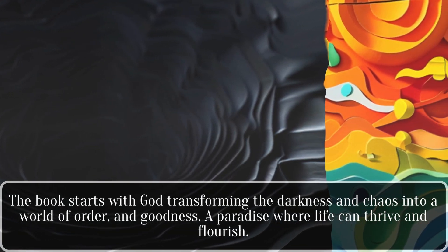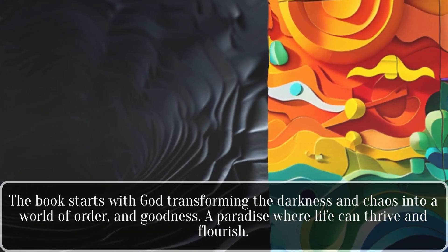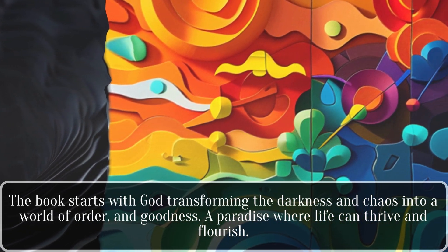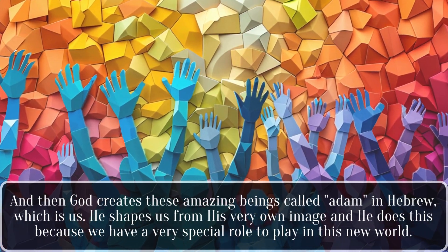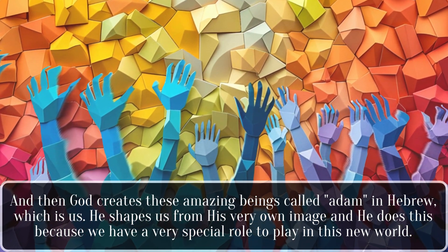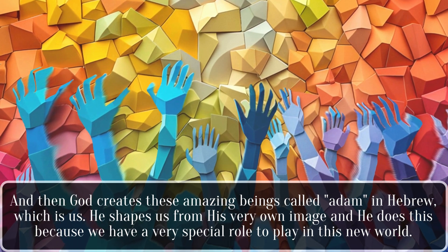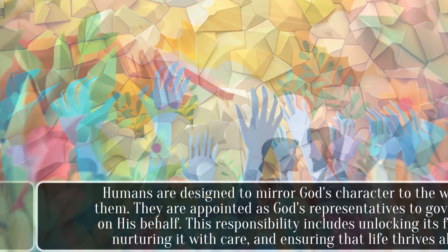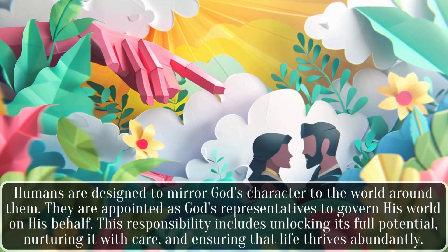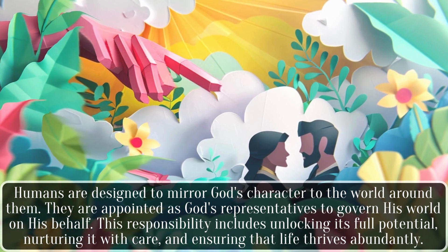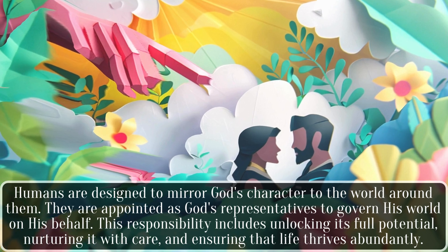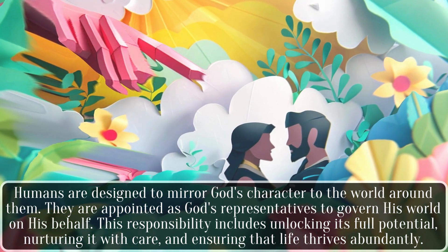The book starts with God transforming the darkness and chaos into a world of order and goodness — a paradise where life can thrive and flourish. Then God creates these amazing beings called Adam in Hebrew, which is us. He shapes us from his very own image, and he does this because we have a very special role to play in this new world. Humans are designed to mirror God's character to the world around them. They are appointed as God's representatives to govern his world on his behalf. This responsibility includes unlocking its full potential, nurturing it with care, and ensuring that life thrives abundantly.